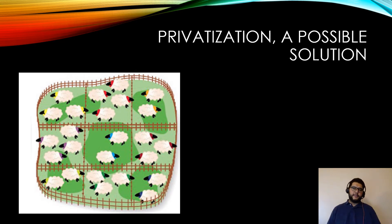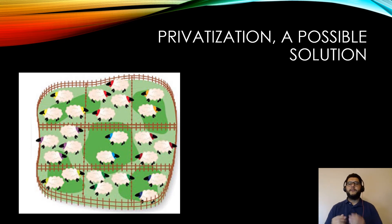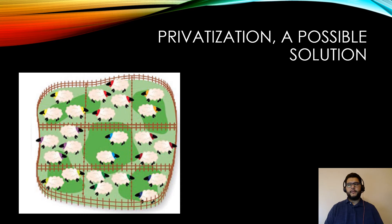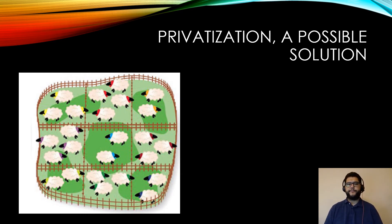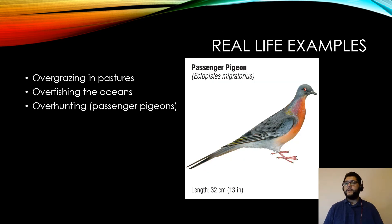One of the possible solutions is privatization — the idea that if we just sectioned off the land and said 'this is only yours,' then you could put the responsibility onto the individual owners. They themselves would probably allow for less overgrazing and overuse in this case.